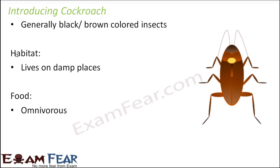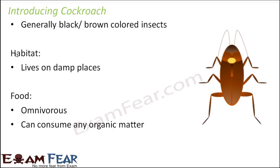Cockroaches can feed on plant remains, small insects, and can consume any organic matter — they can even eat hair, decaying matter, meat, etc. Regarding size, it varies: some are as small as 0.6 centimeters while in some places they can be around 8 centimeters. They are also famous for transmitting diseases, which is why most of us have a cockroach-killing spray at home, and that is why they are called pests.